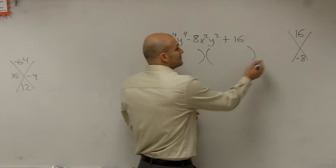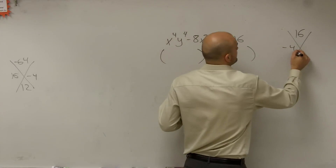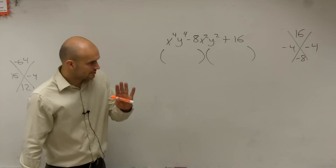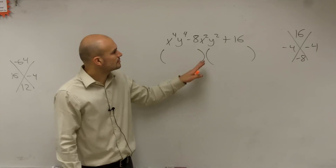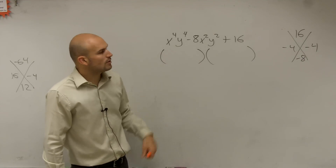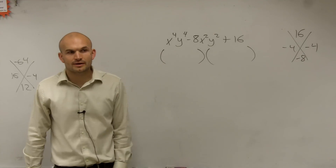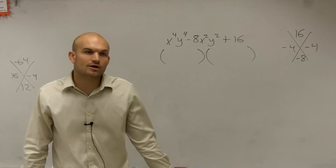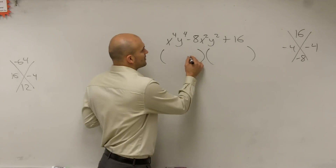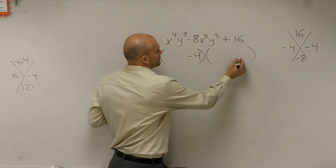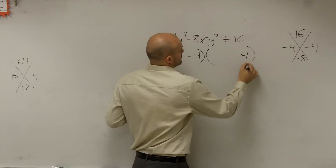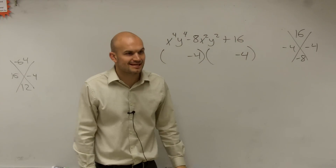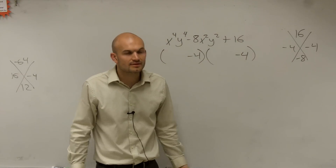Negative 4 and negative 4, right? So what we see here is we know that we're going to have negative 4 and negative 4. Does negative 4 times negative 4 give you 16? Yes.